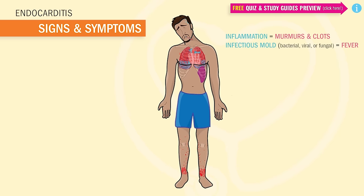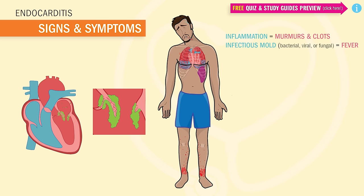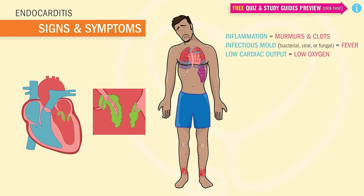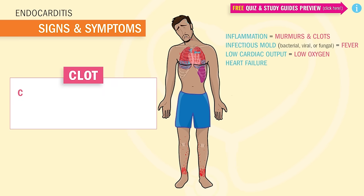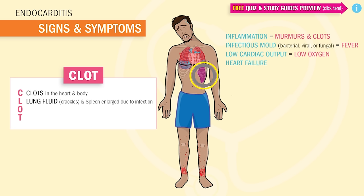Infectious vegetation starts growing on the heart valves, making it hard for the heart to keep a tight seal and pump correctly. This leads to low cardiac output, causing low oxygen to the body, and in severe cases can lead to heart failure. We use the acronym CLOT: C stands for clots in the heart and body, either from the swirling of blood in the inflamed heart or from moldy vegetation breaking off the valve. L stands for lung fluid heard as crackles, and also a large spleen called splenomegaly.